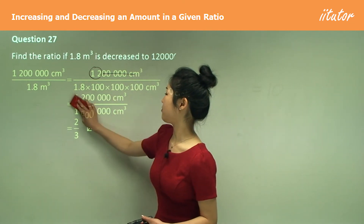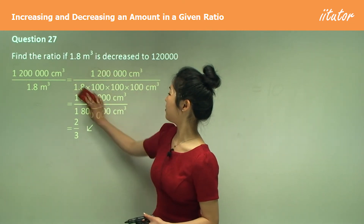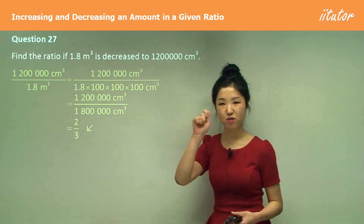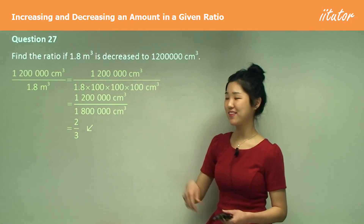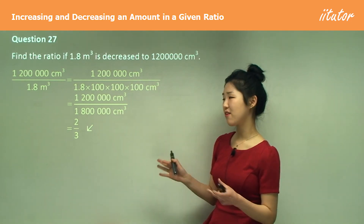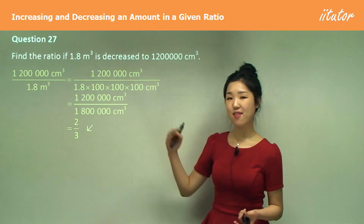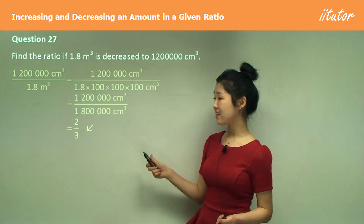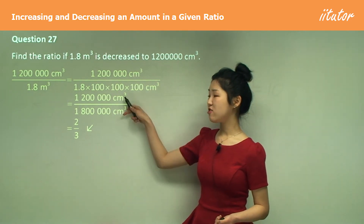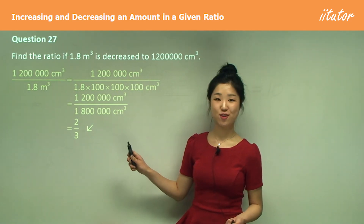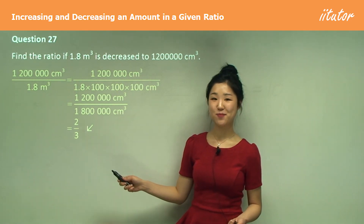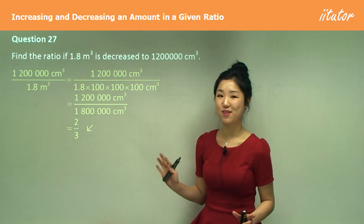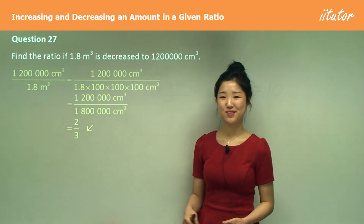Cross out all the zeros first and then simplify by the common factor. And as I keep saying, don't include units in your ratios. So that's the end of increasing and decreasing ratios.